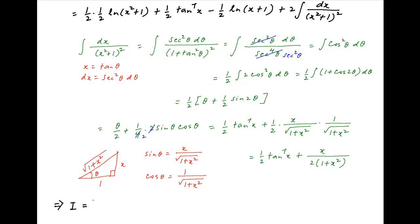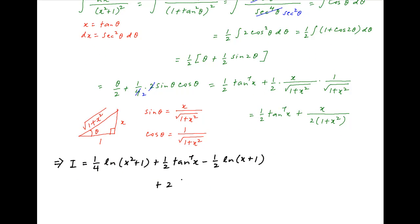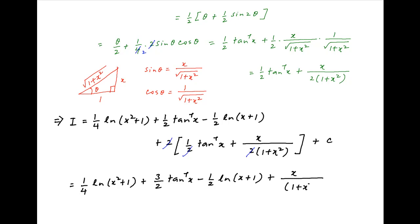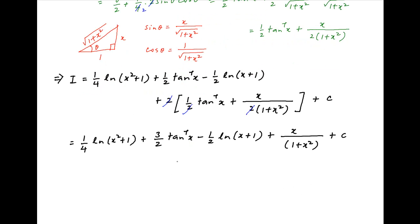Using this result, the given integral I equals one-fourth ln(x squared plus 1) plus one-half tan inverse x, minus one-half ln(x plus 1), plus 2 times [one-half tan inverse x plus x over (2(1 plus x squared))], plus the constant of integration. This simplifies to one-fourth ln(x squared plus 1) plus three-halves tan inverse x minus one-half ln(x plus 1) plus x over (1 plus x squared) plus the constant of integration. This is the required answer.